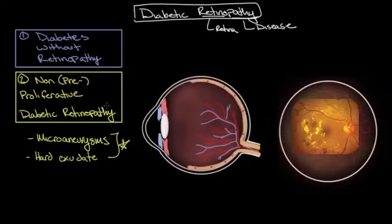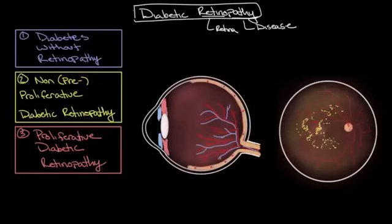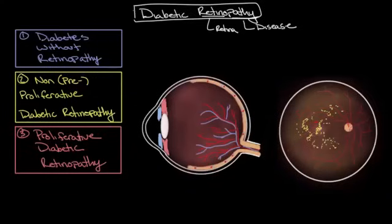This stage usually begins about 15 to 25 years after someone is initially diagnosed with diabetes, and it can last for many years before it progresses to the next stage, which is proliferative diabetic retinopathy. Proliferative diabetic retinopathy can be asymptomatic, however it's pretty uncommon. Most individuals that reach this stage usually will have at least blurry vision or the presence of floaters.